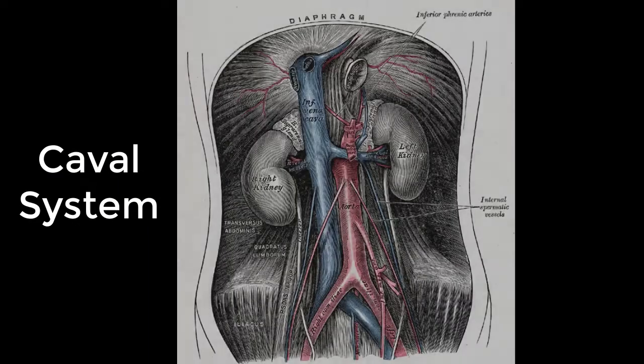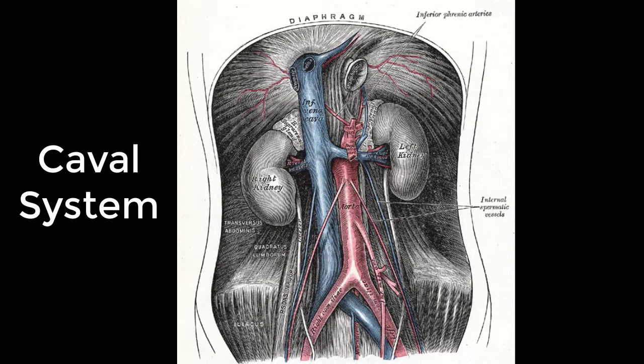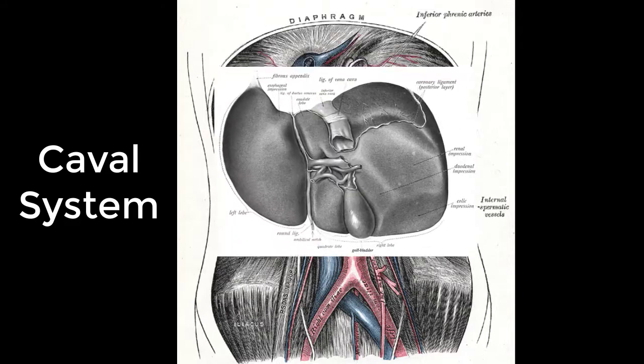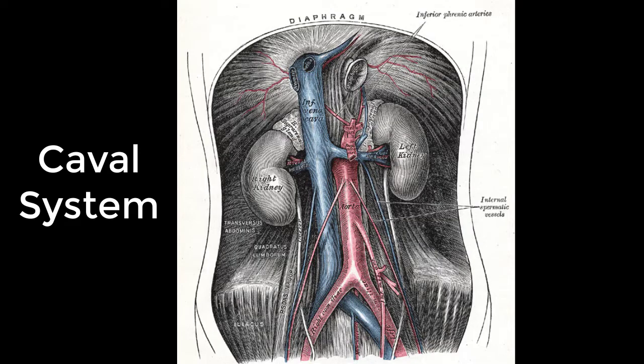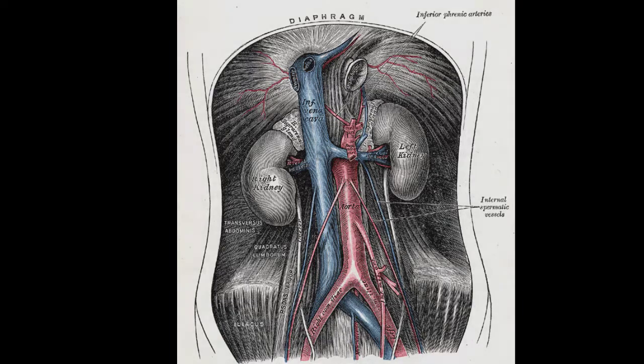Now moving on to the caval system. Caval veins are those that drain into the vena cava, either the superior or inferior vena cava, without going to the liver first. This means it's pretty much every vein in the body not previously discussed. We'll do uppercuts to discuss these, because blood from these veins takes a direct uppercut shot back to the heart.